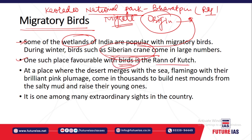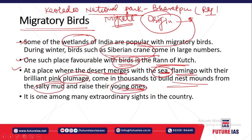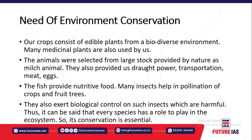Keoladeo National Park in Bharatpur district of Rajasthan is a popular wetland for migratory birds. The Rann of Kutch is also favorable for birds. Where the desert merges with the sea, flamingos with their brilliant pink plumage come in the thousands to build nests in the salty mud, raise their young ones, and then go back with their young ones.